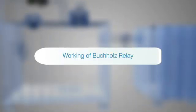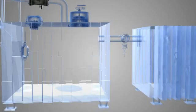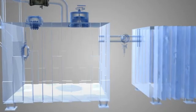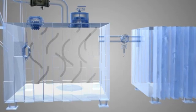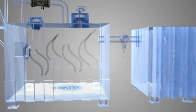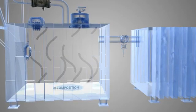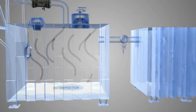Working of the Buchholz relay. Gas generation: Due to incipient faults, local heating takes place inside the transformer and as a result, a gradual decomposition of oil and solid insulating materials occur.